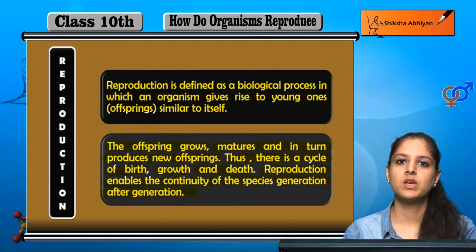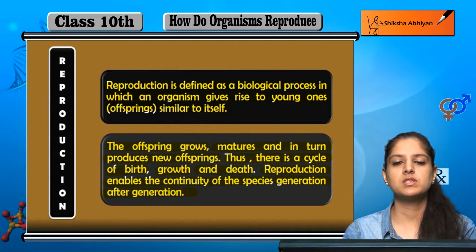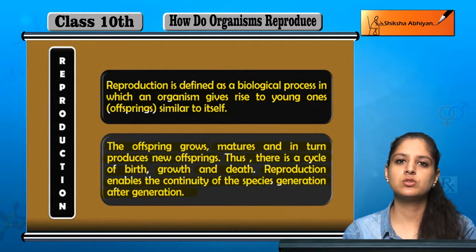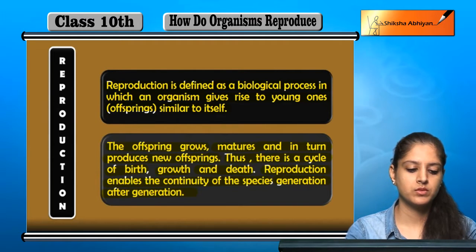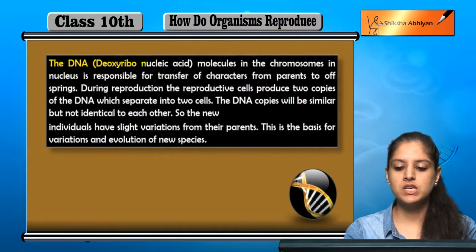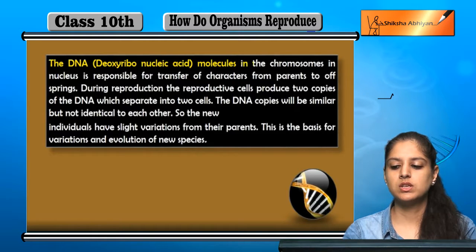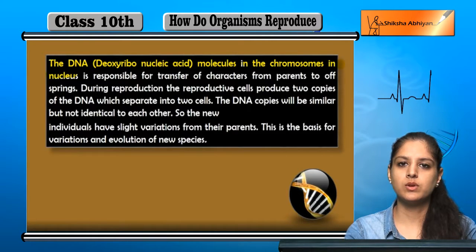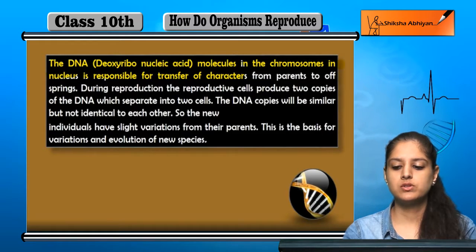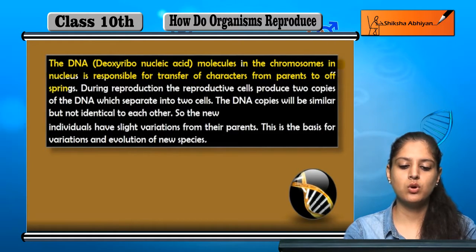Yeh cycle chalti rehti hai. Reproduction ki wajah se hi new species aate hain, aur old species ki death hone ke baad bhi unke andar jo unka number hai woh bana rehta hai. The DNA, that is deoxyribonucleic acid molecules in the chromosomes in nucleus, is responsible for transfer of characters from parents to offsprings.